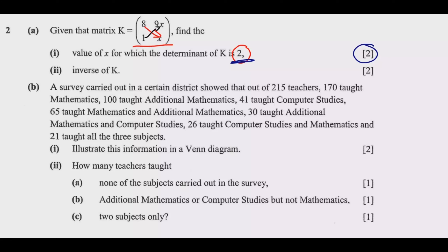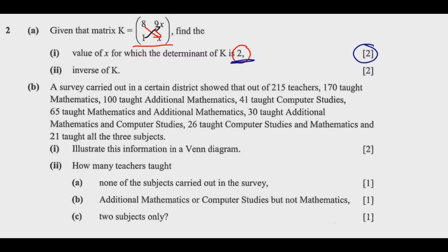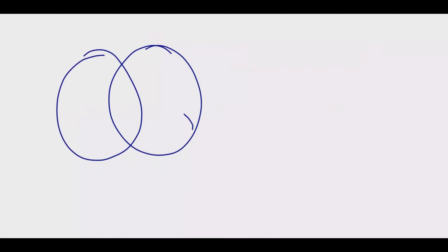Part 1: illustrate this information in a Venn diagram. Part 2: how many teachers taught — A: none of the subjects, B: additional mathematics or computer studies but not mathematics, C: two subjects only. We have three subjects: mathematics, additional mathematics, and computer studies. We are going to draw three overlapping sets.